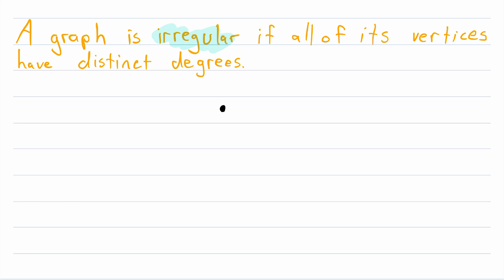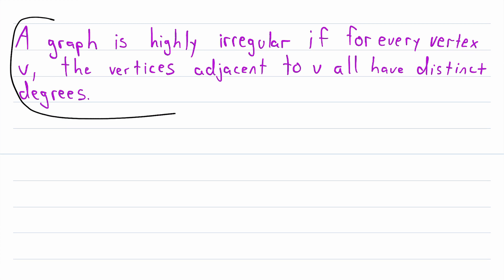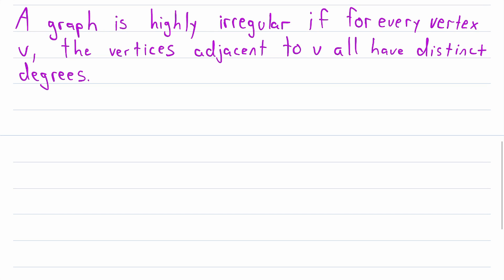Since this definition of irregular graph didn't really lead to anything interesting, mathematicians continued thinking about what definition of irregular graphs might lead to some interesting problems and results. That is where highly irregular — or locally irregular — graphs come in. So let's jot down a description: a graph is highly irregular if, for every vertex V, the vertices adjacent to V all have distinct degrees.